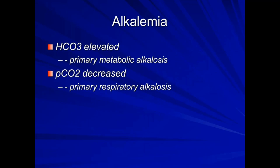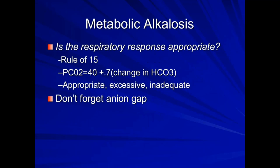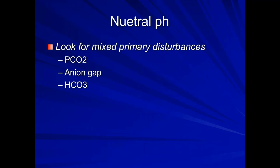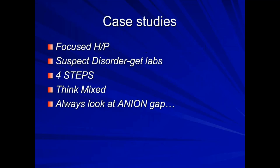For alkalemia, same process. If bicarb is elevated, it's primary metabolic alkalosis. Check the respiratory response — is it appropriate, excessive, or inadequate? Don't forget the anion gap even in alkalemia. If you walk away with one thing: check the anion gap. For a neutral pH, your work is not done — you still have to look at the CO2, the bicarb, and the anion gap. A normal pH does not mean no acid-base disturbance. That's the mistake — you see a normal pH and go home, but you can have significant mixed disturbances underneath.